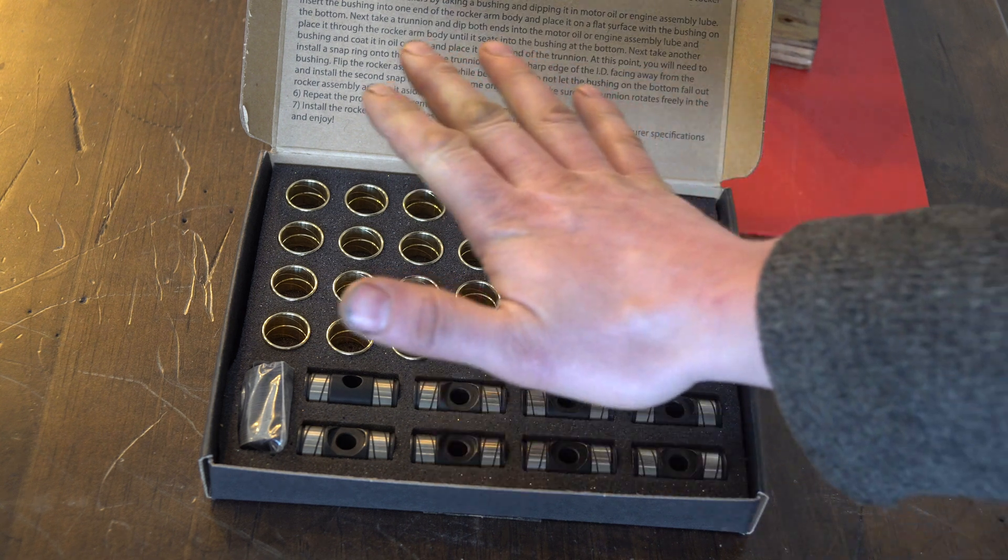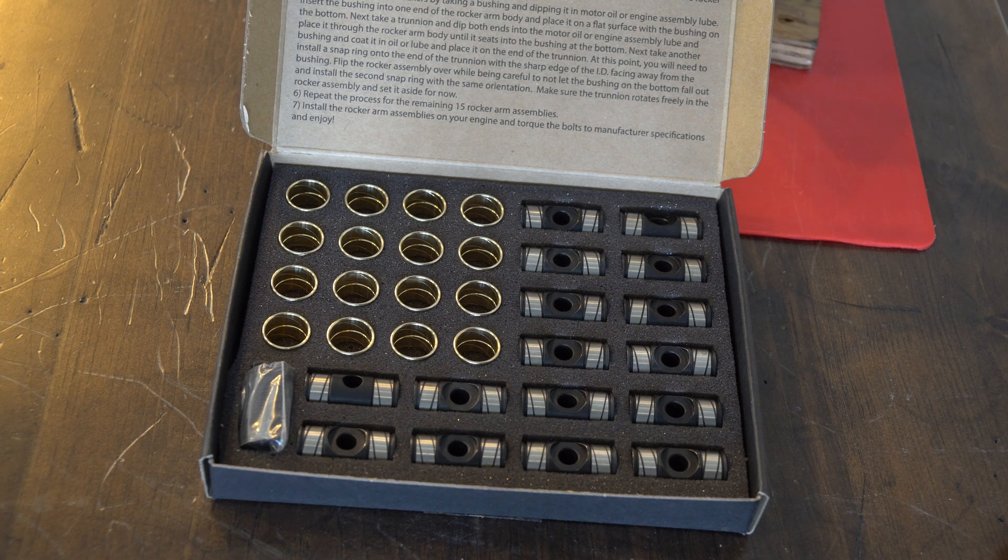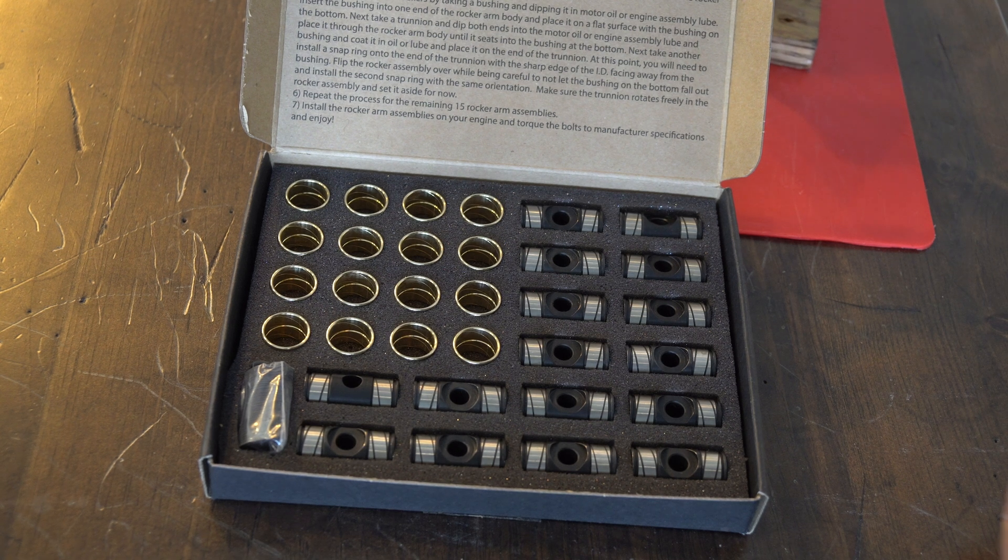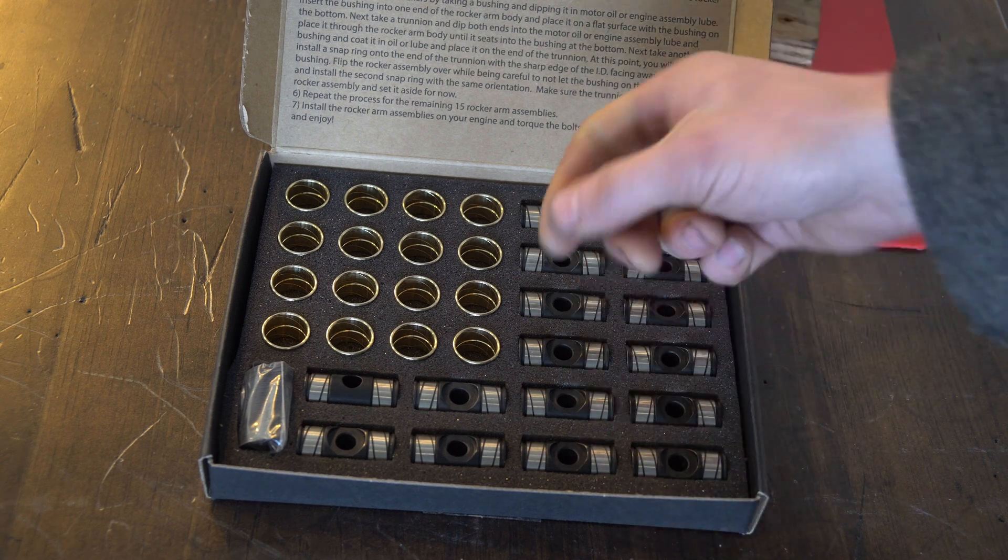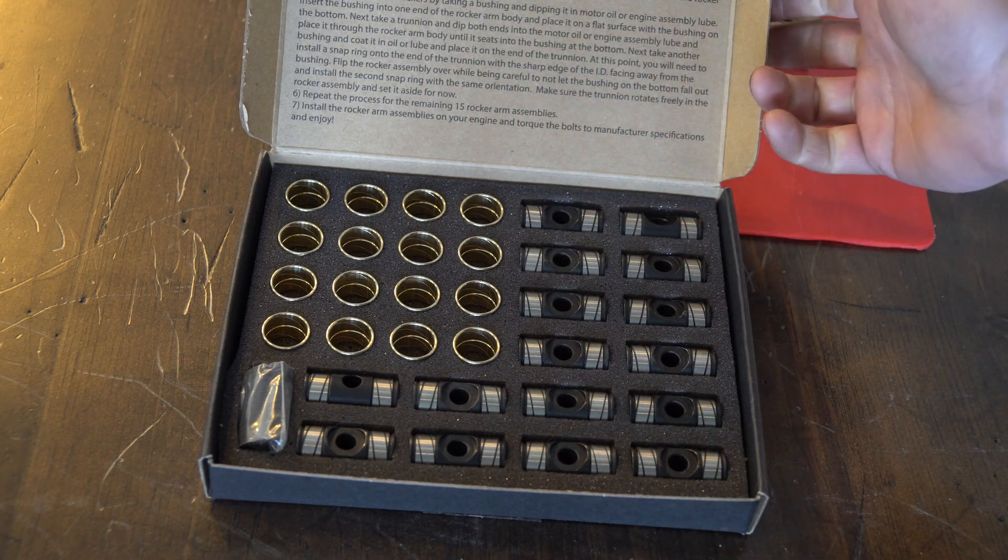So what we're doing is we're upgrading to this bushing style trunnion. First thing we got to do to actually upgrade to this is we've got to open up our old rockers and pull out the old trunnions so that way we can install this bushing based one.